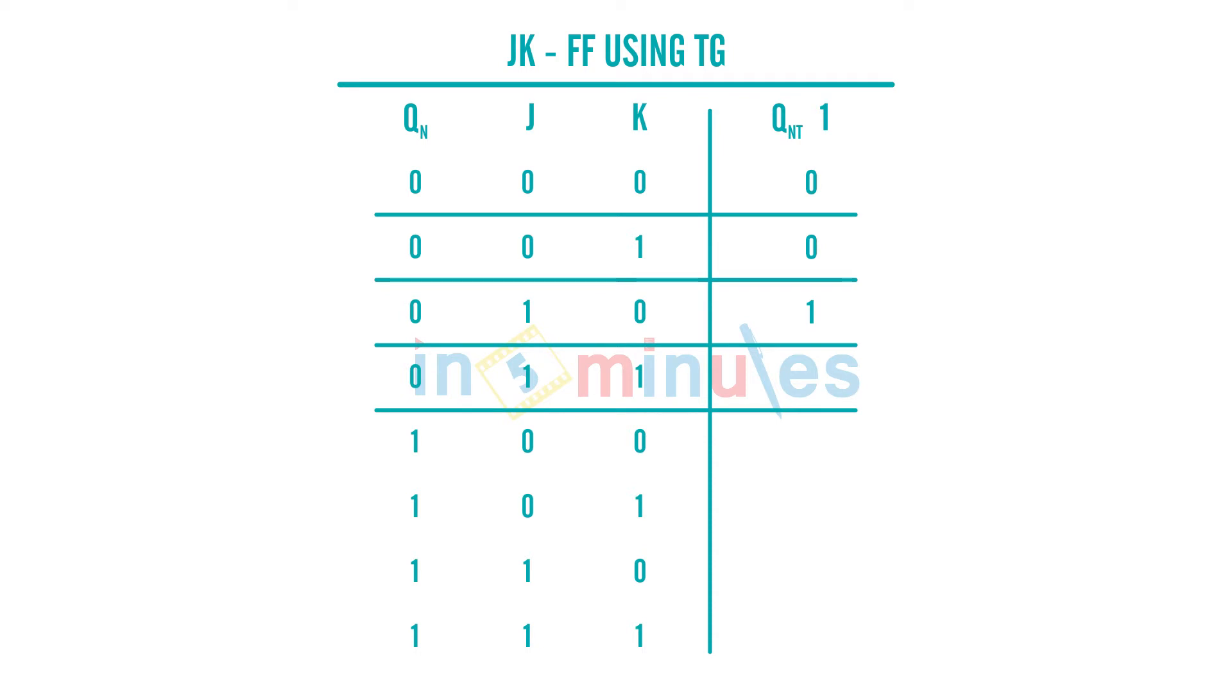My previous value was 0, now it will toggle and it will be 1. Again, as I mentioned, when both are 0 it will not change from the previous value. Previous value was 1, so it will stay 1.